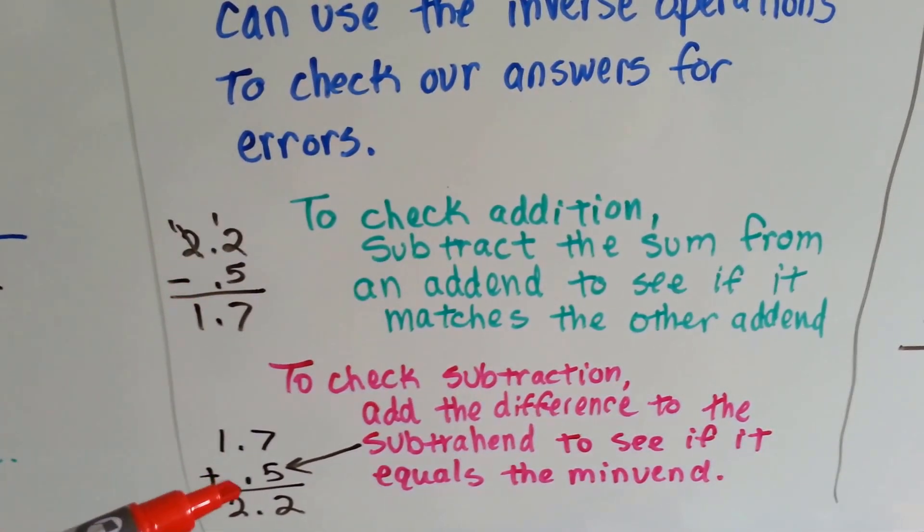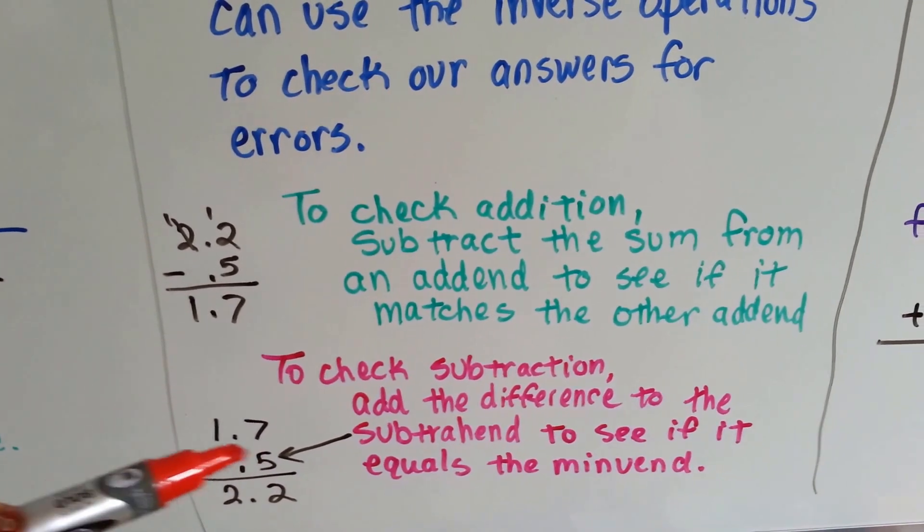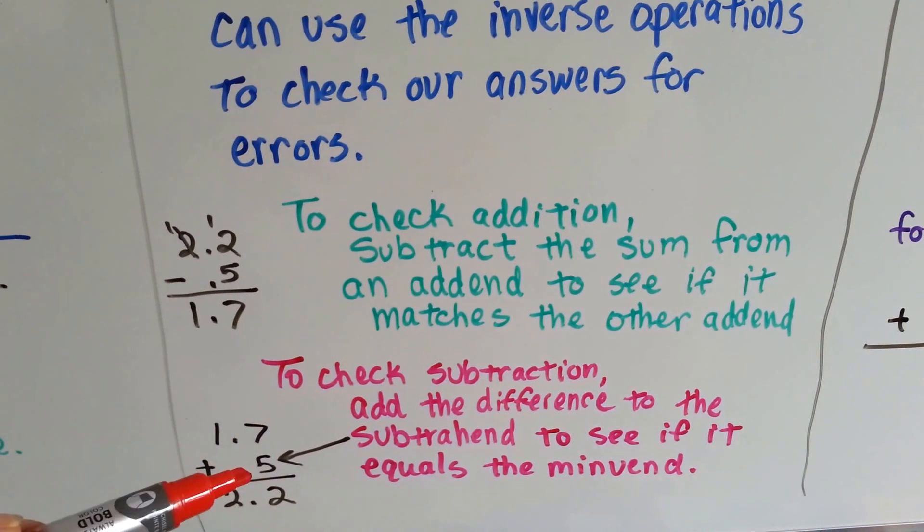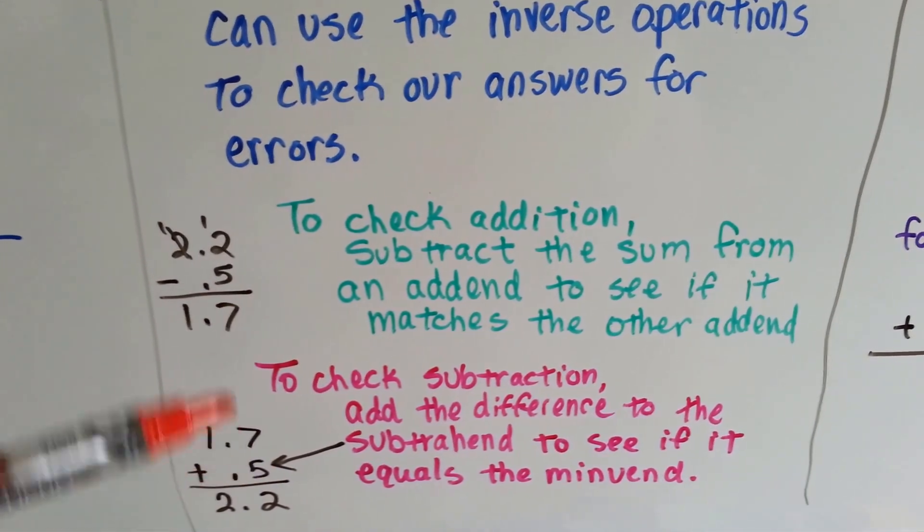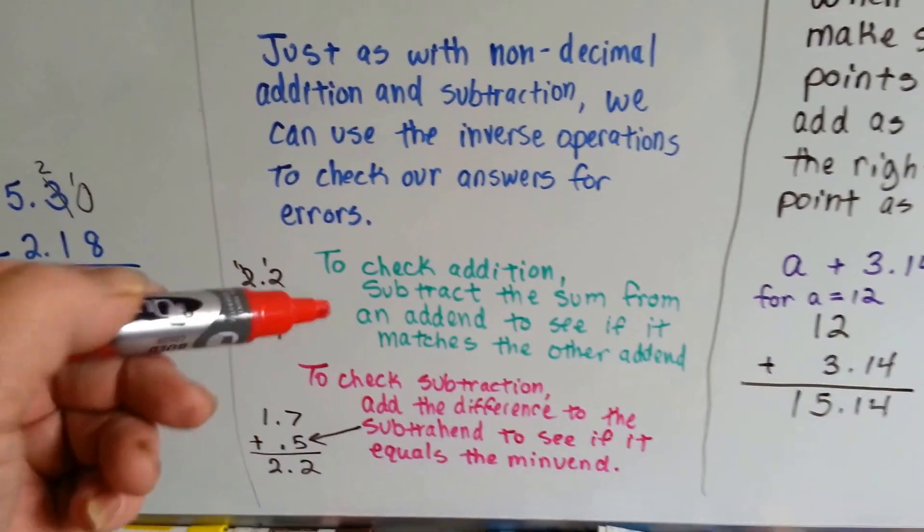And with the addition one, you just spin it around and take away for subtraction. To check addition, we do subtraction, and we just spin it around and see if it equals the other number. No different than if there was no decimal there.